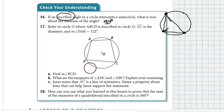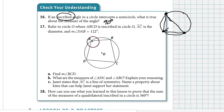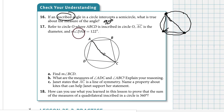Question 17: refer to this drawing where quadrilateral ABCD is inscribed in circle O. We're told that segment AC is a diameter of the circle, so connecting A to C passes through the center. We're also told that the measure of angle DAB is 122 degrees — let's label that: from D to A to B is 122 degrees.